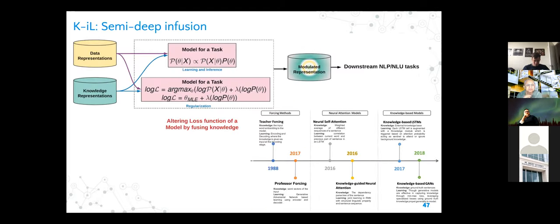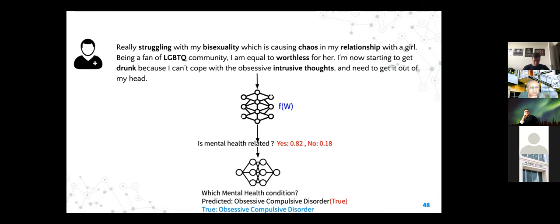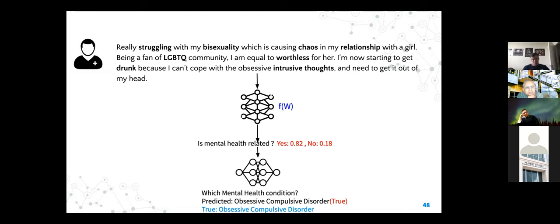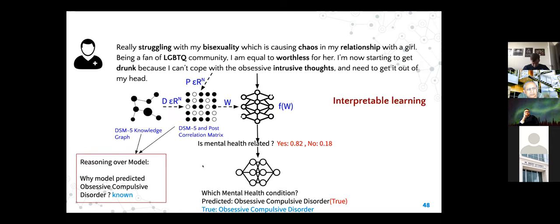Now let me give you a small example of how this can be done in practice — a visualization of how this goes into your model structure. Suppose I have a post with highlighted entities that I'm interested in. I'm using a transformer model or any deep learning model, and when I ask whether a condition is a mental health condition, the predicted outcome comes out to be Obsessive Compulsive Disorder, and the true outcome is also Obsessive Compulsive Disorder.